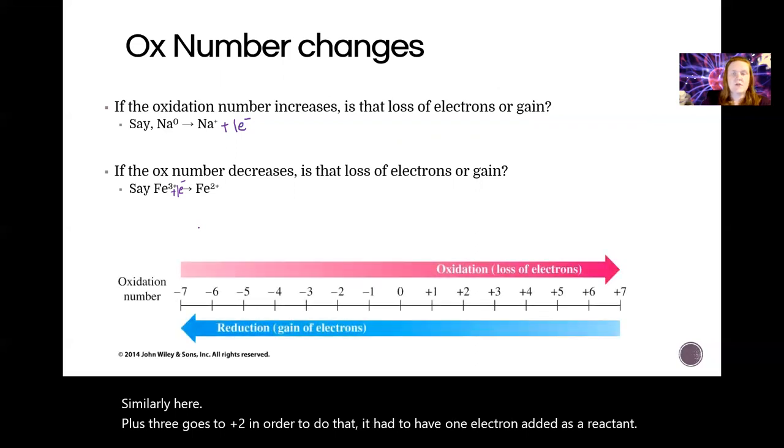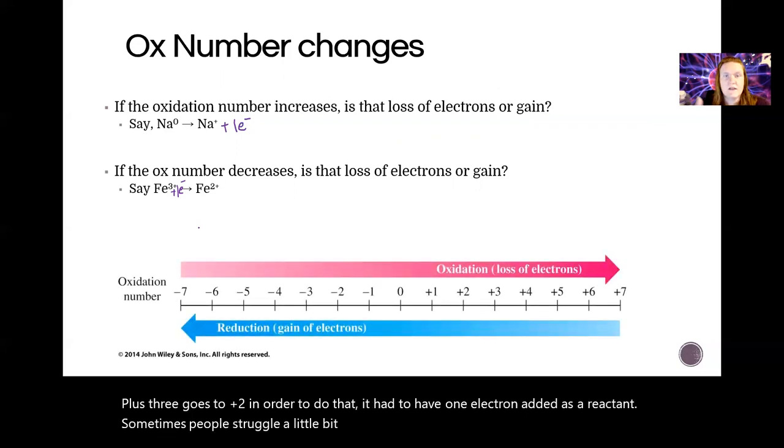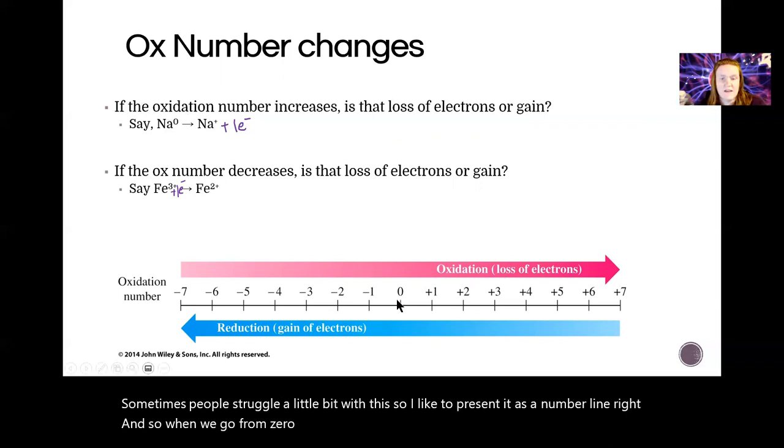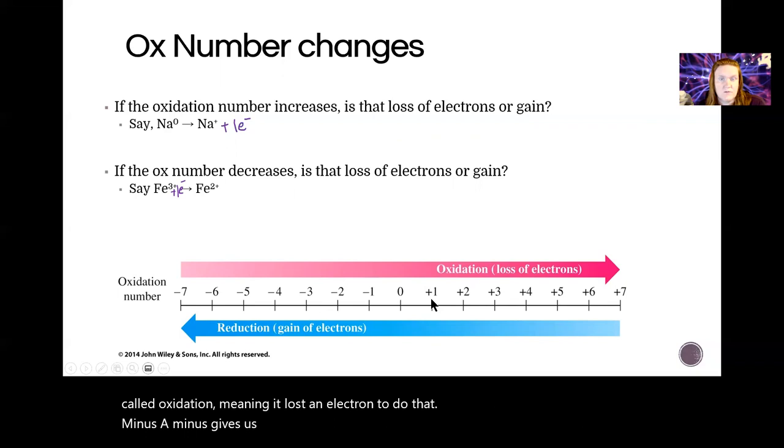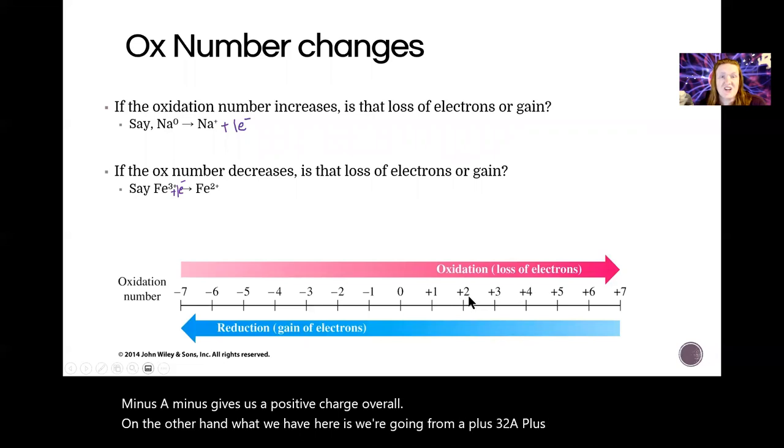Sometimes people struggle a little bit with this, so I like to present it as a number line. When we go from zero to plus one, that's an increase in the oxidation state which is called oxidation, meaning it lost an electron to do that. Minus a minus gives us a positive charge overall. On the other hand, what we have here is we're going from a plus three to a plus two - that's a reduction in the charge, in the oxidation state.